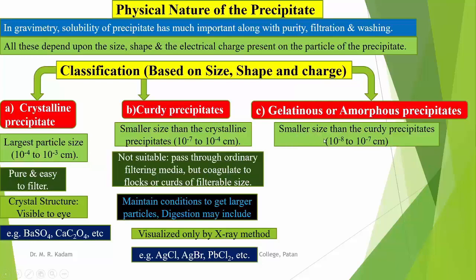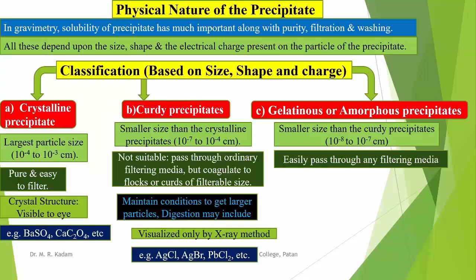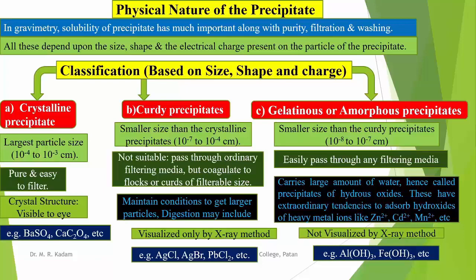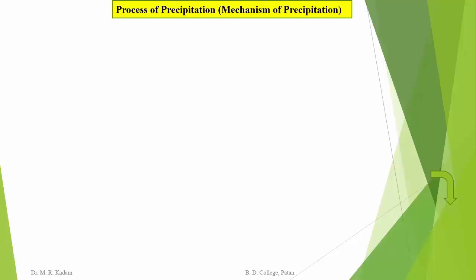The third type is the gelatinous or amorphous precipitates. These have a smaller size than curdy precipitates, ranging from 10⁻⁸ to 10⁻⁷ centimeters. They can easily pass through ordinary filtering media. These precipitates carry large amounts of adsorbed water, hence they are called precipitates of hydrous oxides. They have extraordinary tendencies to adsorb hydroxides of heavy metals like Zn²⁺, Cd²⁺, Mn²⁺, etc. Their crystal structure cannot be visualized even by X-ray methods. Examples are aluminum hydroxide and ferric hydroxide.